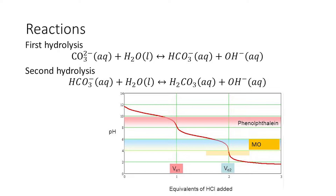The first step of the titration takes place close to the pH change of the phenolphthalein indicator, so you can use phenolphthalein to determine the first endpoint. The second step takes place around the pH change of the methyl orange indicator, so you can use methyl orange to determine the second endpoint.